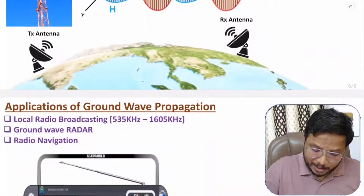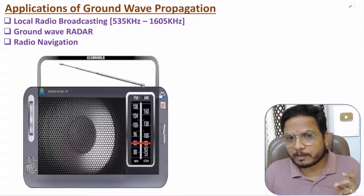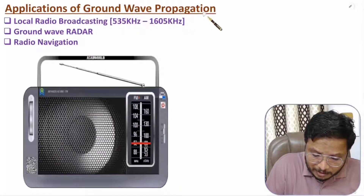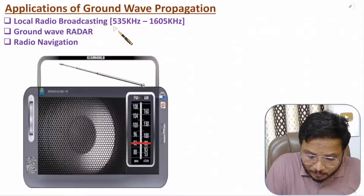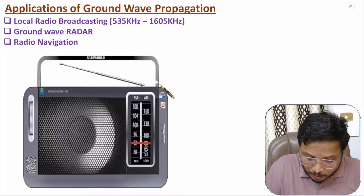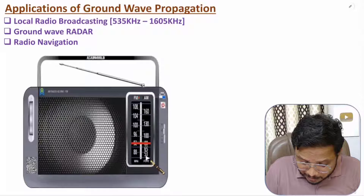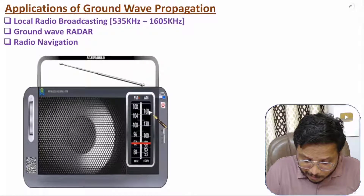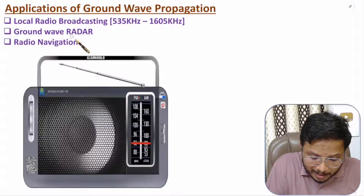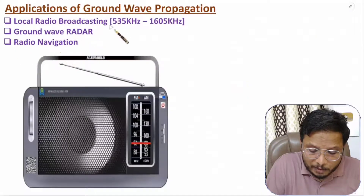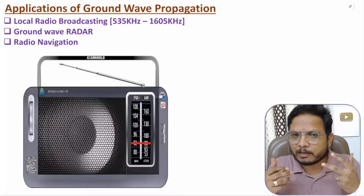Now I'll discuss applications of ground wave propagation. It is limited to 2 megahertz of frequency and is broadly used with local AM radio broadcasting, where frequency ranges from 535 kilohertz to 1605 kilohertz. Other applications include ground wave radar and radio navigation. These are the major applications of ground wave propagation.